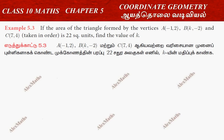Hi students, this is Alex here. Example 5.3. If the area of the triangle formed by the vertices A, B, and C taken in order — that is, the anti-clockwise direction — is 22 square units, find the value of K.